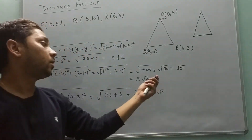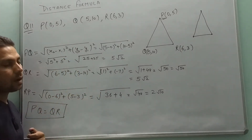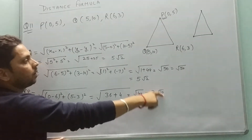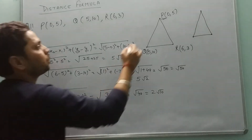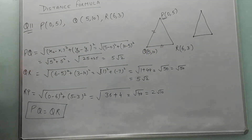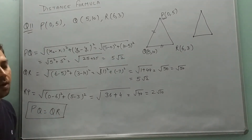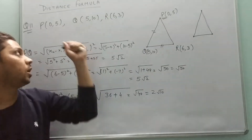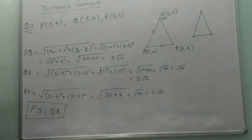Calculating PQ and QR, both values come out as 5 root 2. We must also calculate the third side RP — if all three sides are equal it would be equilateral. RP equals 2 root 10, so only two sides are equal. Since PQ equals QR, the condition of an isosceles triangle is satisfied.